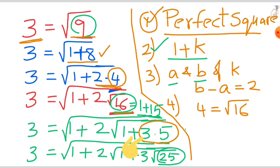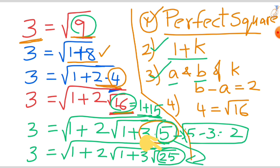So 5 minus 3 is 2, so their difference is 2. That's the third step. And again, this end number, that is 5, you write in terms of perfect square. So that is 5, perfect square is 25. So again we repeat the process.